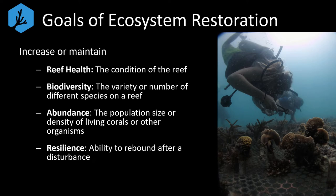After monitoring and research has identified that there is a problem with the reef ecosystem, both passive and active restoration measures can begin. These measures are generally focused on increasing reef health, abundance, and biodiversity. Together, these three factors contribute to what is known as the resilience of the ecosystem, or its ability to withstand or rebound from a disturbance.